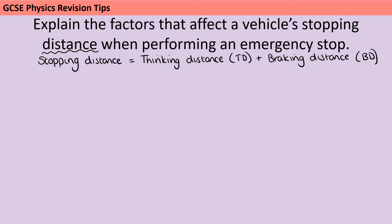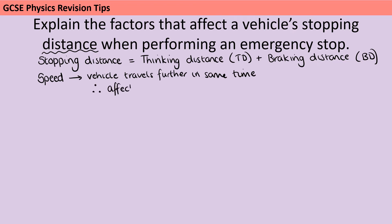There are certain things that will affect just thinking distance, certain things that will affect just braking distance, and then there is one thing that will affect both of them — the speed of the vehicle. If a vehicle is travelling at a higher speed, then even if the time taken remains the same, it will cover more ground, and so that's going to affect both thinking distance and braking distance. In terms of the thinking distance, even if your reaction time remained exactly the same — let's say 0.3 seconds — if you're driving at 60 miles an hour, you're going to travel over twice as much distance as if you were travelling at 30 miles an hour within that same time.